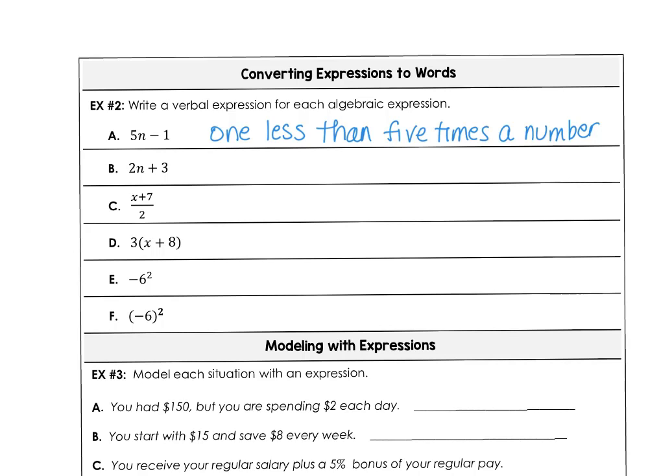For letter B, we have two times a number plus three, so we could say that is three more than twice a number. Three more than twice a number. And if you want to call it the number n, you can do that as well. So same thing with the first one. One less than five times a number, and my number is n.